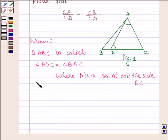And we have to prove that CA divided by CD equals CB divided by CA.